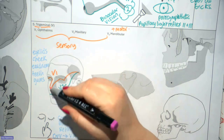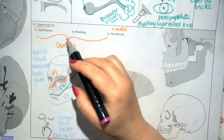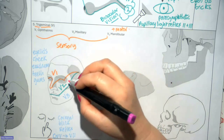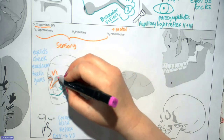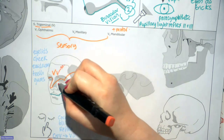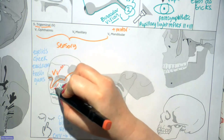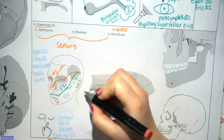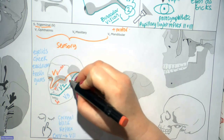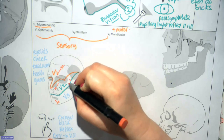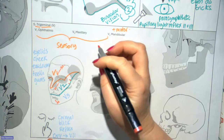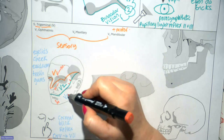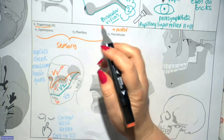Some of the nerves that help distribute trigeminal neurons include the supraorbital nerve, the infraorbital nerve, the mental nerve, the zygomatico-temporal, and zygomatico-facial nerves. So there are lots of little branches of cutaneous nerves emerging to supply the skin of the face.